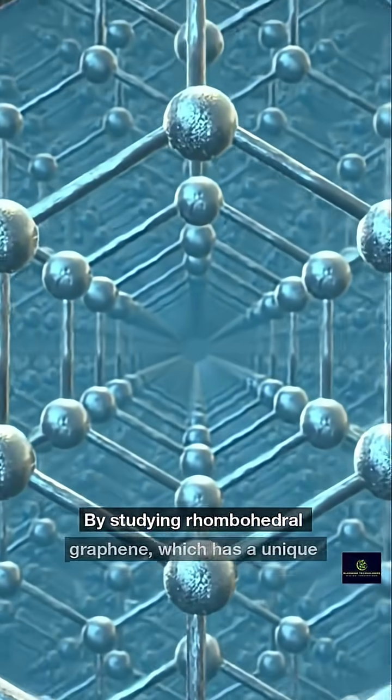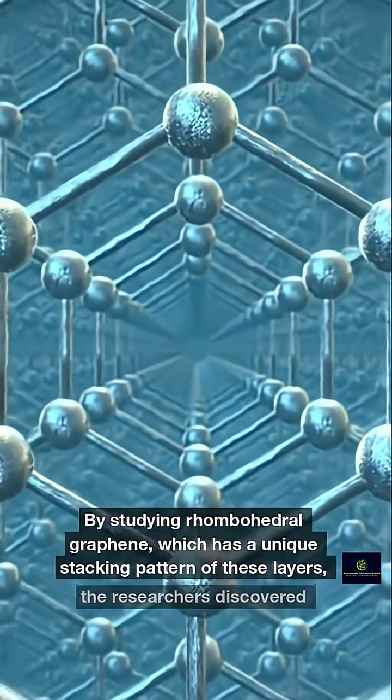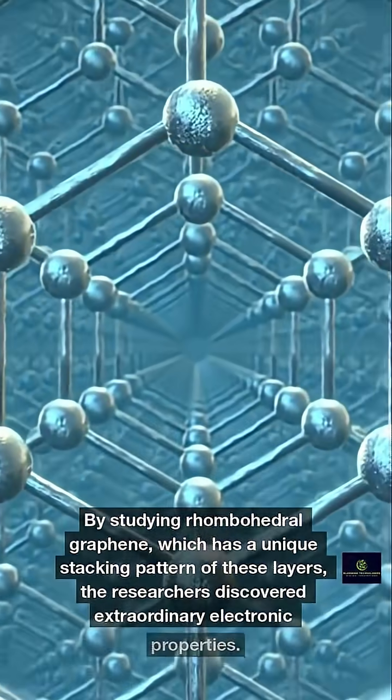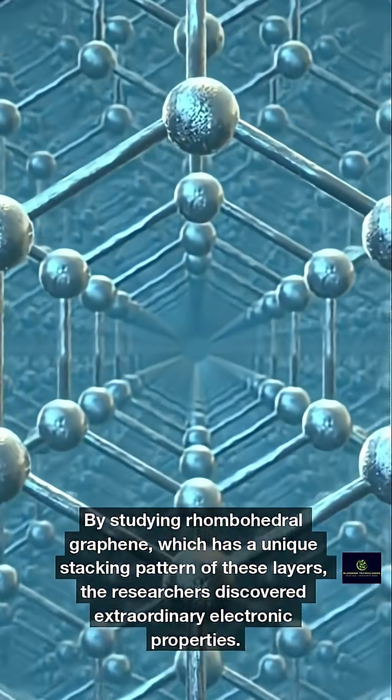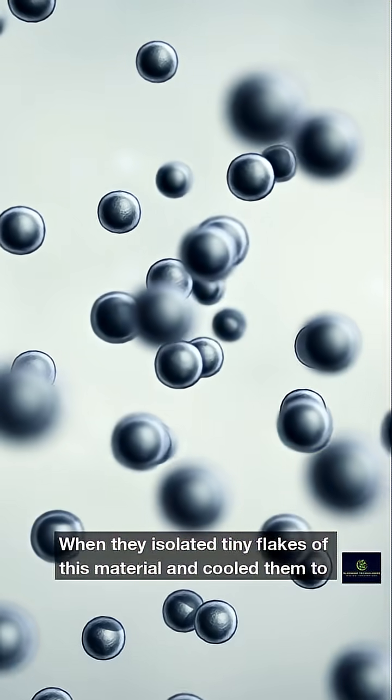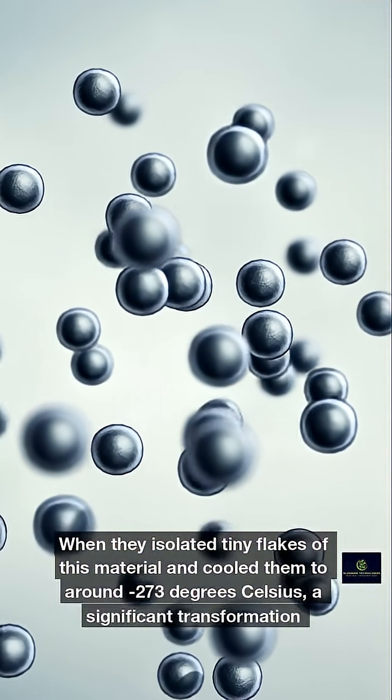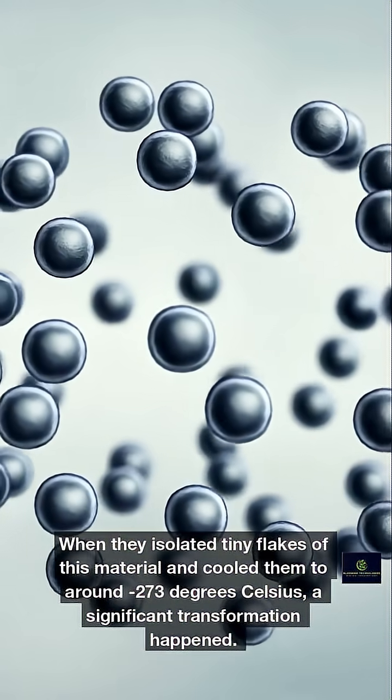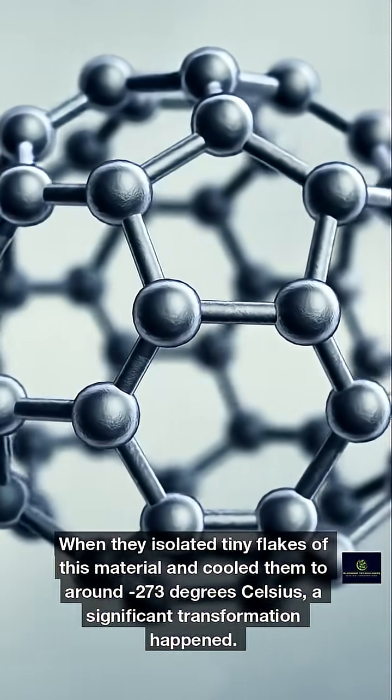By studying rhombohedral graphene, which has a unique stacking pattern of these layers, the researchers discovered extraordinary electronic properties. When they isolated tiny flakes of this material and cooled them to around 273 degrees Celsius, a significant transformation happened.